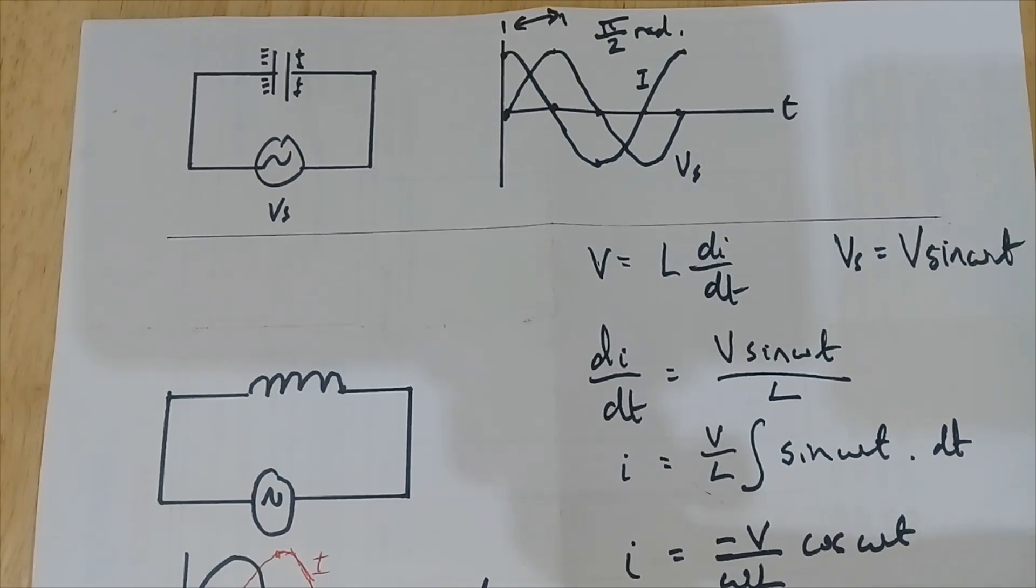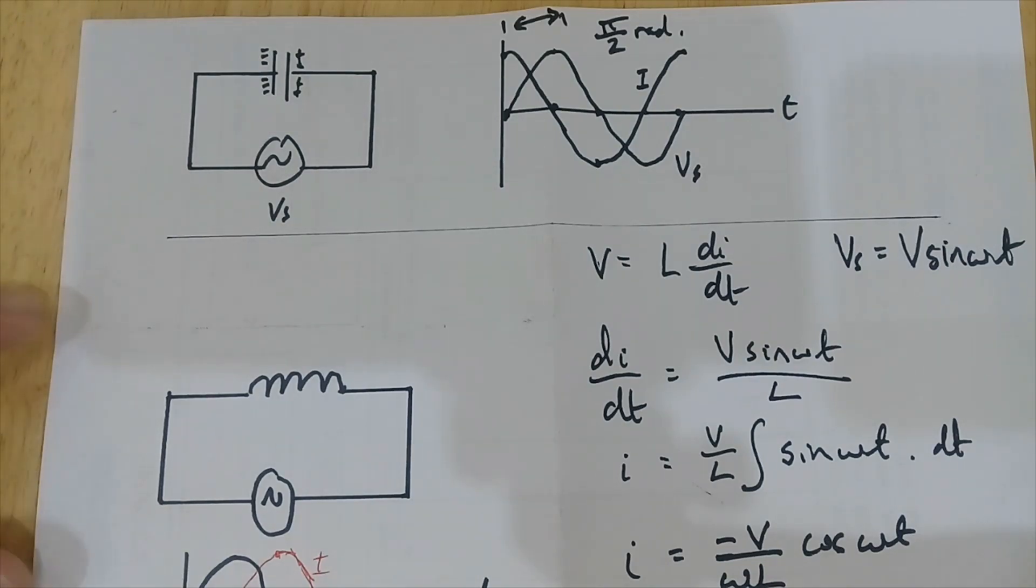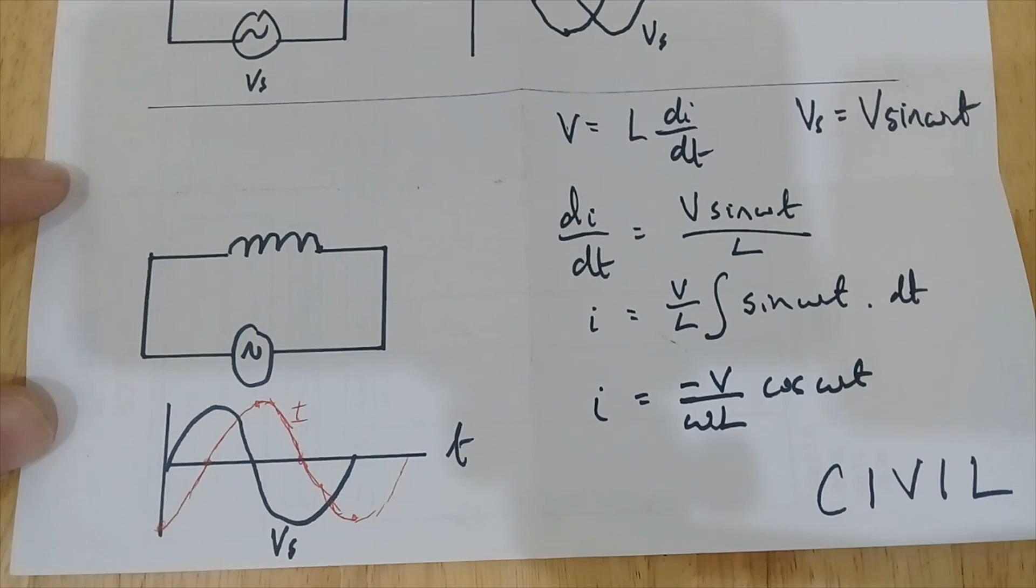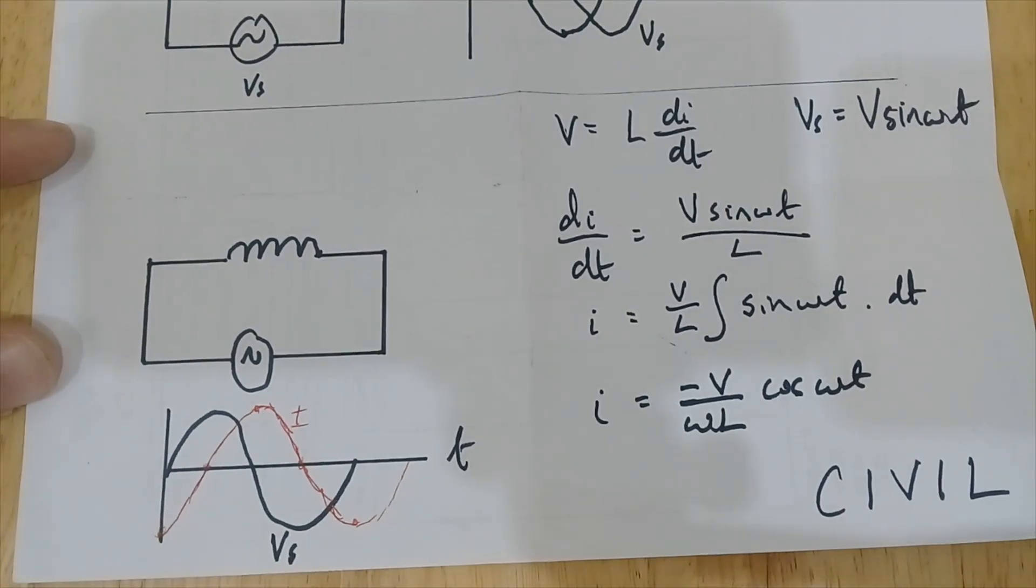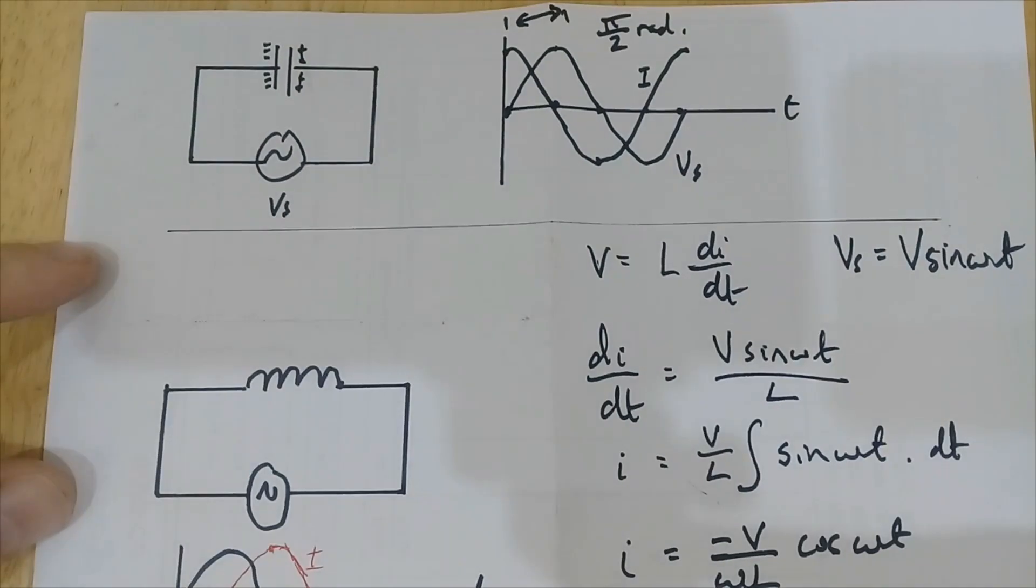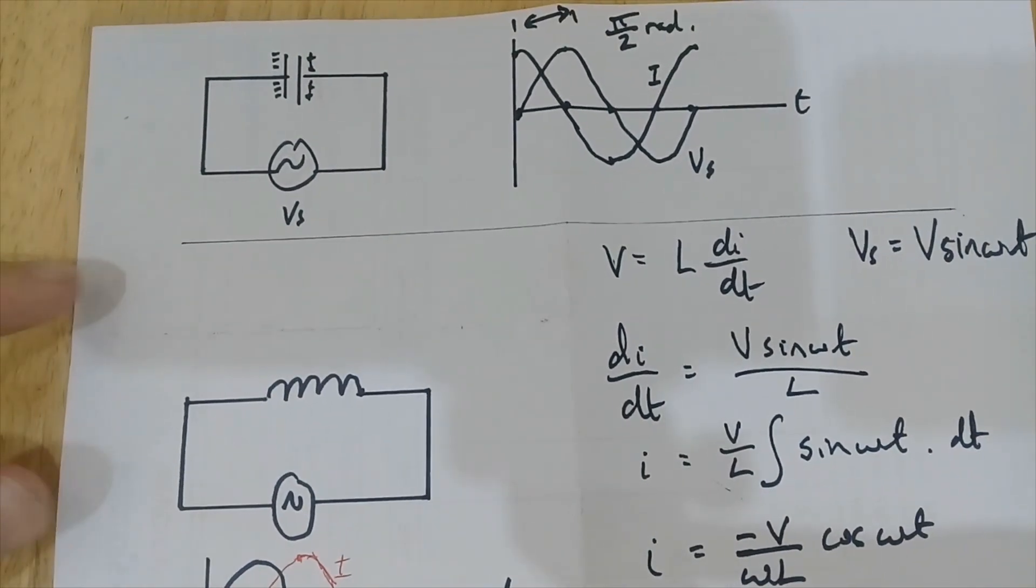For a capacitor, it's much easier to look at what the current and voltage are doing, whereas in an inductor it's not very intuitive at all. The best way is just to do a bit of year 12, 13 mathematics. So let's first have a look at the capacitor.